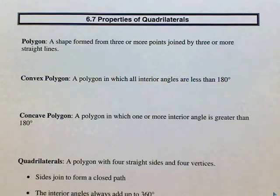6.7 Properties of Quadrilaterals. Let's start off with a few definitions. Polygon. A polygon is simply a shape formed by three or more points joined by three or more straight lines.